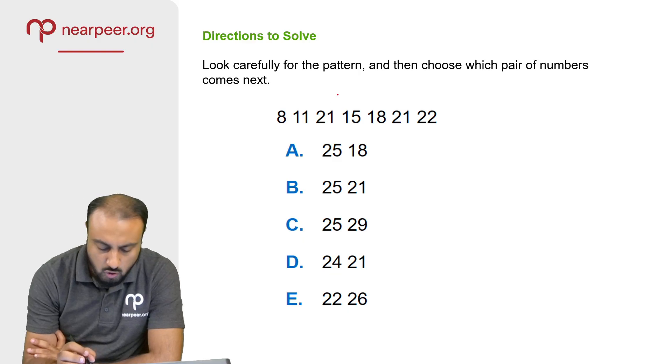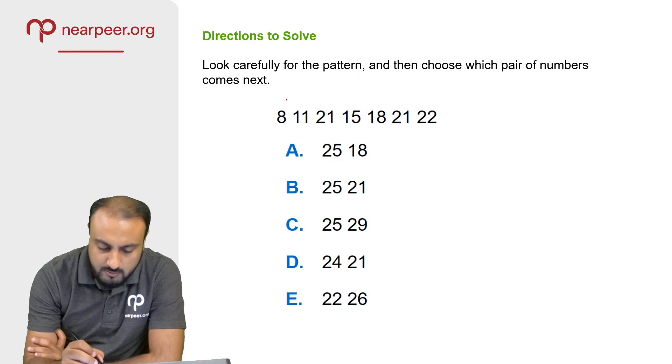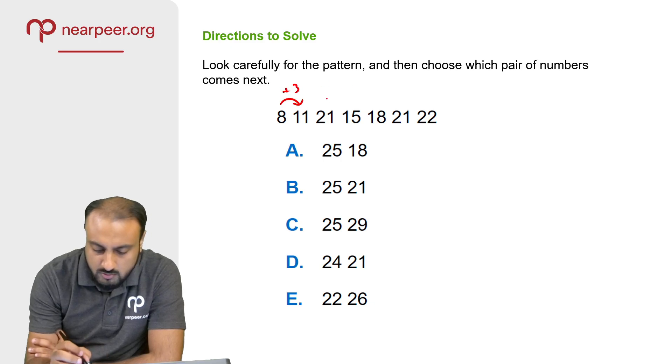We'll have a combination here. From 8 to 11: 8, 9, 10, 11 — that is plus 3. So 8 plus 3 equals 11.